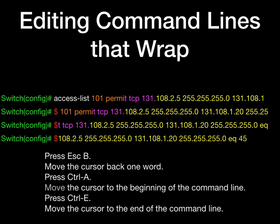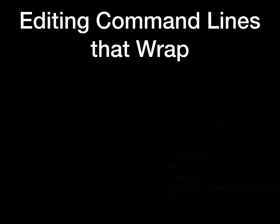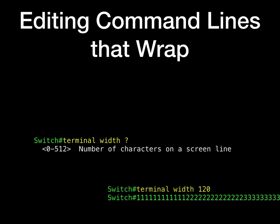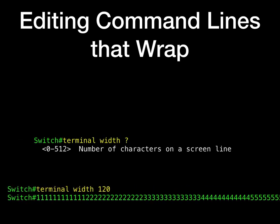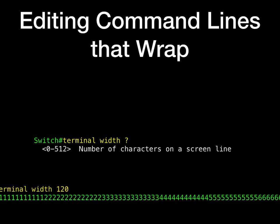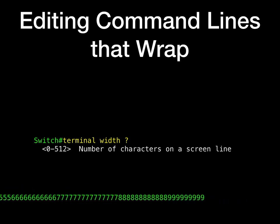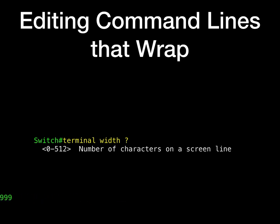In this example, the Access List Global Configuration command entry extends beyond one line. When the cursor first reaches the end of the line, the line is shifted 10 spaces to the left and redisplayed. The dollar sign shows that the line has been scrolled to the left. Each time the cursor reaches the end of the line, the line is again shifted 10 spaces to the left. The software assumes you have a terminal screen that is 80 columns wide. If you have a width other than that, use the Terminal Width privileged exec command to set the width of your terminal. Use line wrapping with the command history feature to recall and modify previous complex command entries.